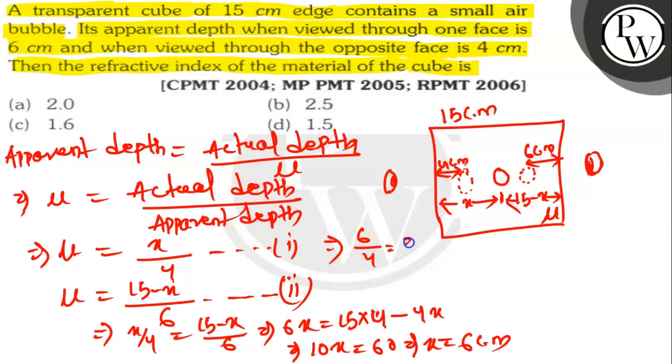6 by 4 or 3 by 2, which is 1.5. The value of mu is 1.5. So then the refractive index of the material of the cube is 1.5. D is the correct answer.